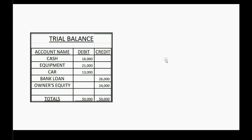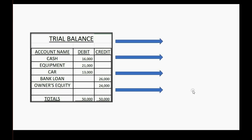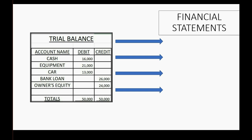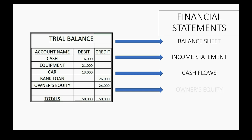Although you can see some things about business operations from the trial balance, you gain better insights by reorganizing those numbers into financial statements. These are the documents used to judge how well a business is doing and to make business decisions. Taking the trial balance numbers and organizing them into financial statements presents a clearer picture of what's happening in the business.